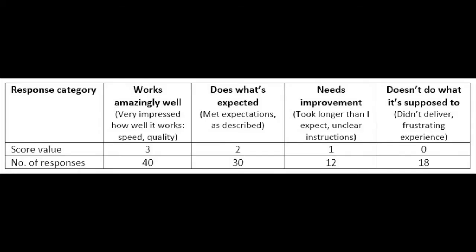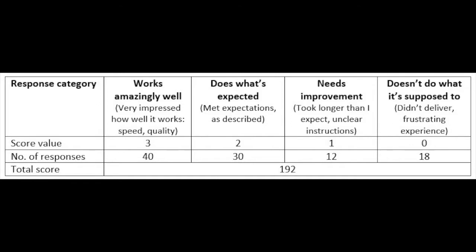Step number four is to review all the responses and count the number of responses for each category. And the last step is to compute the total score. You simply multiply the value for that category by the number of responses for that category. For the example that we are looking at, the total score turns out to be 192.